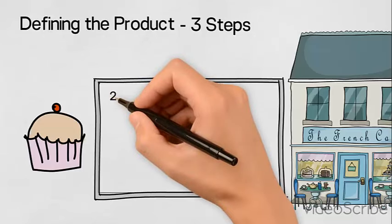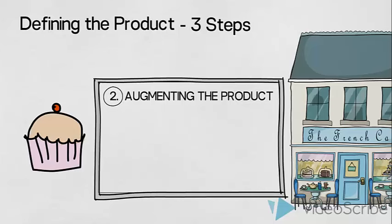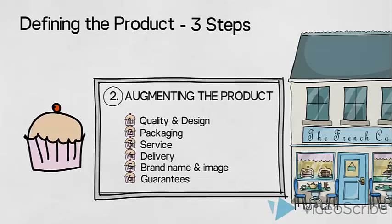Secondly, we should look at how we can augment the product. To augment means to make greater by adding something. This is how we fulfill our target group's needs and desires, differentiate our product from the competitors and subsequently build our product or business brand. Theory tells us that we can look at six different areas of augmenting a product. Let us go through them using our example with the French Cafe.